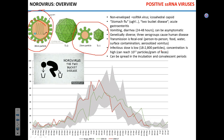Norovirus is very genetically diverse, which means if you get infected with one strain, a month later you can be infected with another and have no immunity against the different genotype or serotype. Transmission is fecal-oral. The main sites of transmission are nursing homes and schools — places where hygiene is often questionable or hard to maintain. There is also some association with restaurants and seafood, and leafy vegetables.